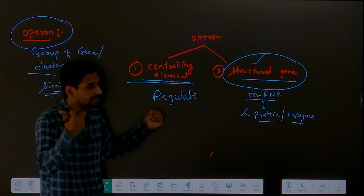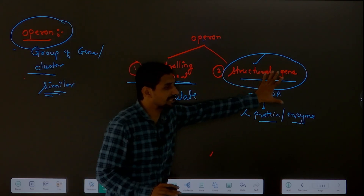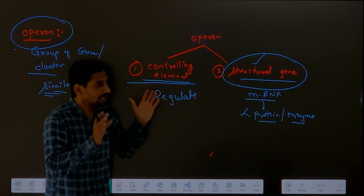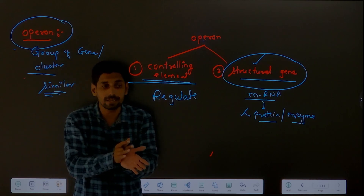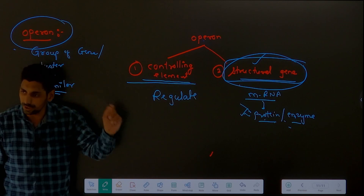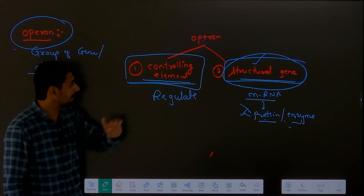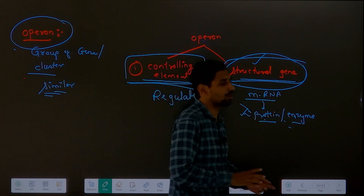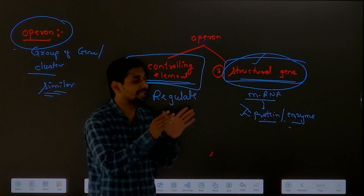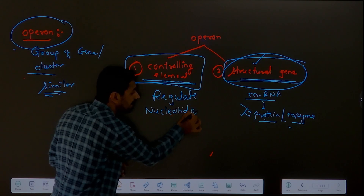If the controlling element decides it will produce a protein, it will produce an enzyme. If the controlling element decides no - there will be no transcription, no RNA, no protein and enzyme. The controlling element is that part of the operon which will decide the formation of protein or enzyme with the help of structural gene. Whether structural gene's protein will form or not - who decides this? The controlling element. So inside the operon, one is the controlling element and the second is the structural gene.